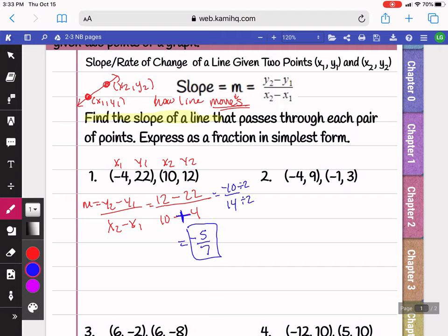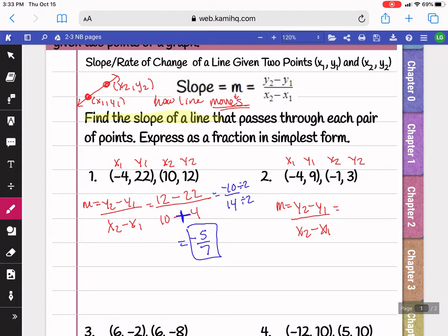On the second problem here, we're going to do the same process. So I'm going to label my x1, y1 and my x2, y2. And then I'm going to write down my slope formula so that I can plug in. So for y2, I'm going to plug in 3. For y1, I'm going to plug in 9. So it's 3 minus 9. x2 is negative 1, then minus, and x1 is negative 4.